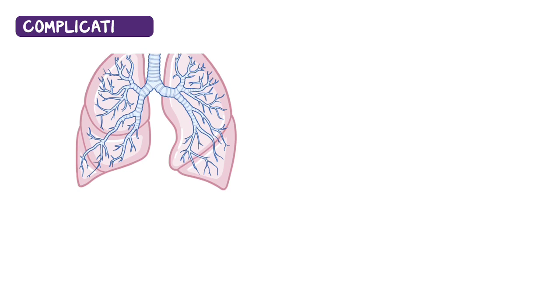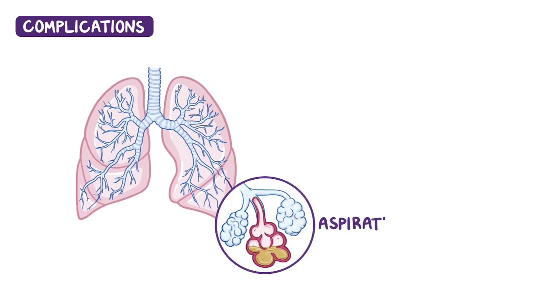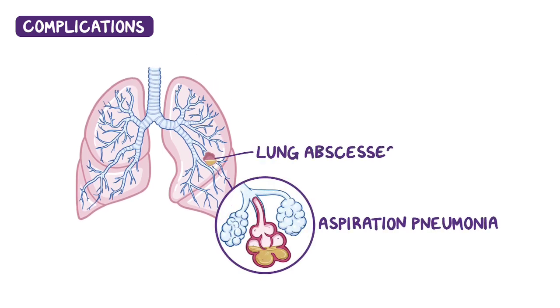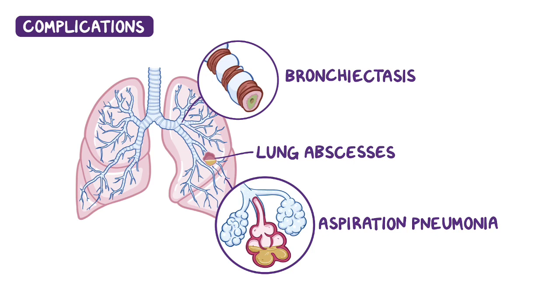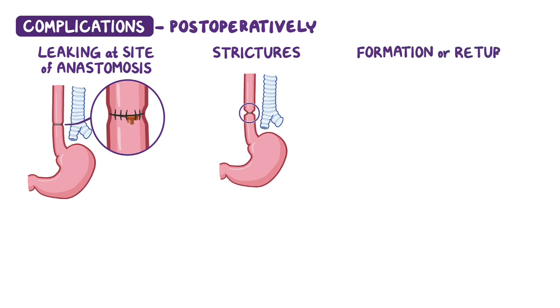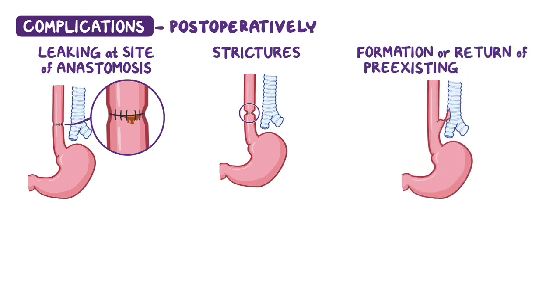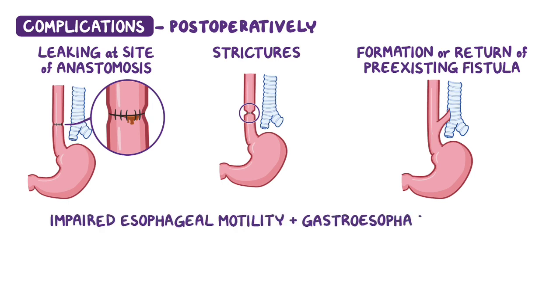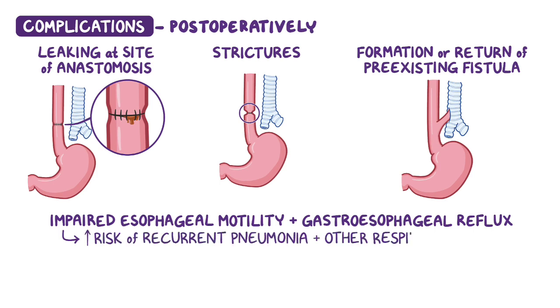Complications include aspiration pneumonia and lung abscesses or bronchiectasis due to recurrent aspiration. Postoperatively, complications include leaking at the site of anastomosis, strictures, or the formation or return of preexisting tracheoesophageal fistula. Other complications include impaired esophageal motility and resulting gastroesophageal reflux, which increases the risk of recurrent pneumonia and other respiratory problems.